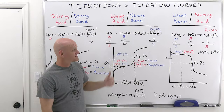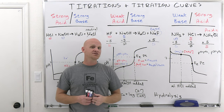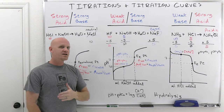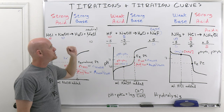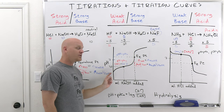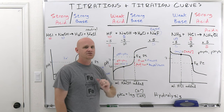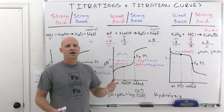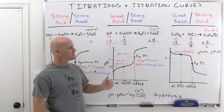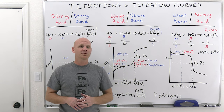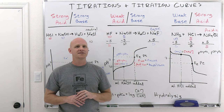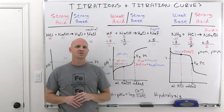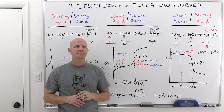That wraps up this lesson. In the next couple of lessons, we'll do all the pH calculations for titrations — first strong acid/strong base, then weak acid/strong base, calculating pH at various points along the titration curve. Weak base/strong acid titrations are pretty analogous, so we may only do one or two of those. If you found this lesson helpful, the thumbs up button is the best way to support the channel. Check out my general chemistry master course — link in the description, free trial available. Happy studying!